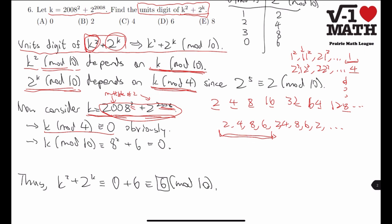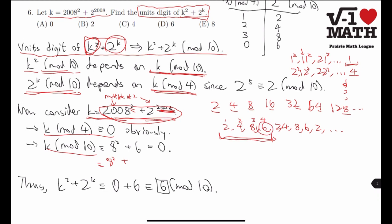But on the other hand, k mod 10, we can see as 8 squared congruent to 8 squared plus... now, 2008 is a multiple of 4. So if we consider this pattern of repeating 4s, we see that every 4th term we get a 6. So 2 to the power of 2008 is congruent to 6 mod 10.